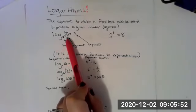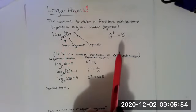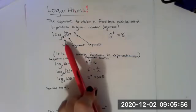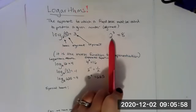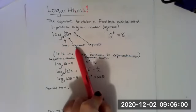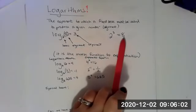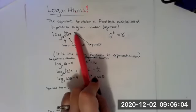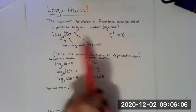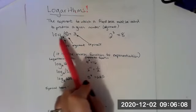A logarithmic representation of that would be log base two of eight equals three. Two is the base, just like it is here. Eight is the argument, what the power produces, and then three is the exponent. So this is the structure of a logarithmic equation.